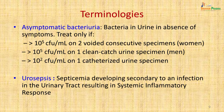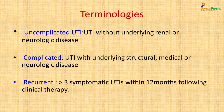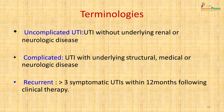Urosepsis is defined as septicemia developing secondary to a urinary tract infection resulting in systemic inflammatory response or SIRS. Uncomplicated UTI is UTI without any underlying disease such as renal or neurological disease. Complicated UTI involves structural, medical or neurological disease such as prostate enlargement or bladder stones. Recurrent disease is defined as more than three symptomatic UTIs within 12 months following clinical therapy.